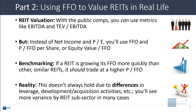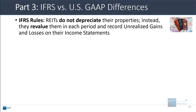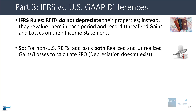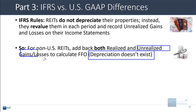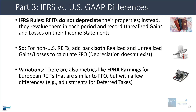Under IFRS versus US GAAP, the biggest difference is that under IFRS, REITs do not depreciate their properties. Instead they revalue them each period — quarterly, semi-annually, or annually — and record unrealized gains and losses on their income statements. For non-US REITs calculating FFO, you must add back or reverse both realized and unrealized gains and losses, since depreciation doesn't exist. There are also metrics like EPRA earnings for European REITs that are quite similar to FFO but use unrealized gains and losses and include adjustments for deferred taxes.